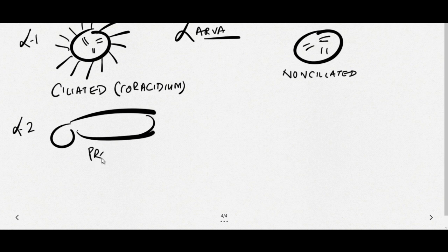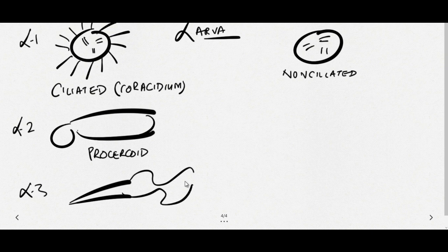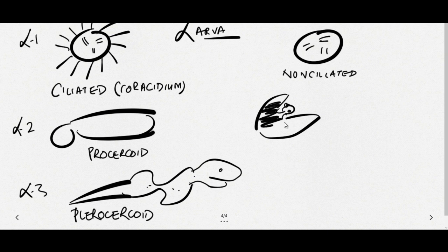The second larval stage is Procercoid larva. And third larval stage is more elongated, more developed, that is Plerocercoid larva. It is more solid compared to Procercoid larva. Now sometimes people don't consider Coracidium or ciliated embryo the first stage. In textbooks sometimes it is written that Procercoid is first stage and Plerocercoid is second stage, and they consider that ciliated Coracidium is Oncosphere which is released. So anyways, but we are discussing differences.